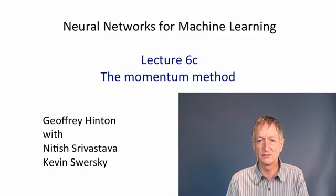The momentum method can be applied to full batch learning, but it also works for mini-batch learning. It's very widely used, and probably the commonest recipe for learning big neural nets is to use stochastic gradient descent with mini-batches combined with momentum.